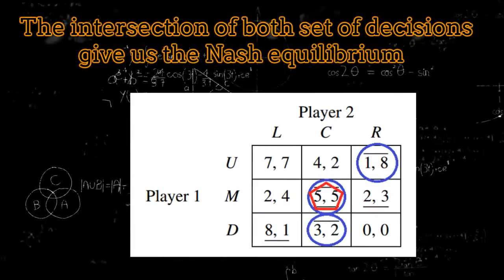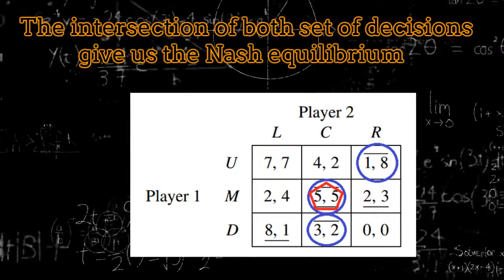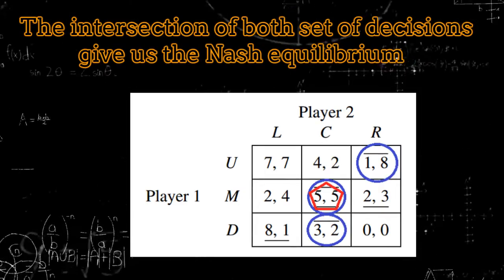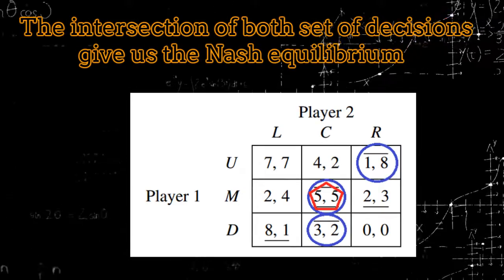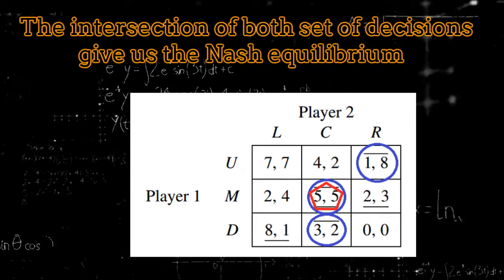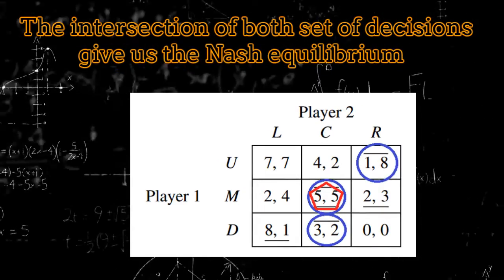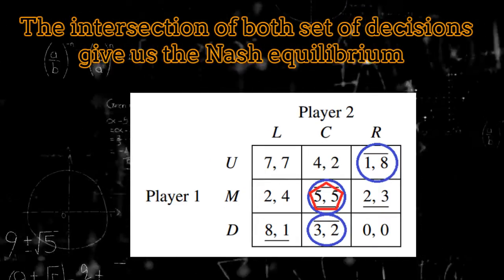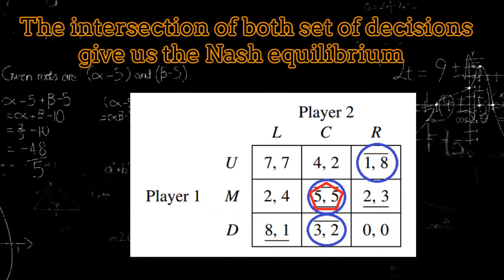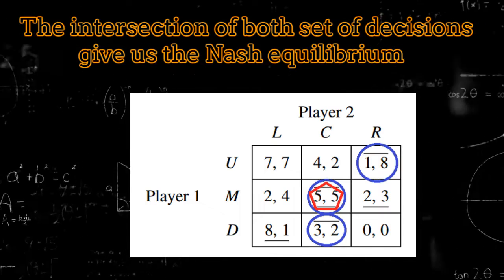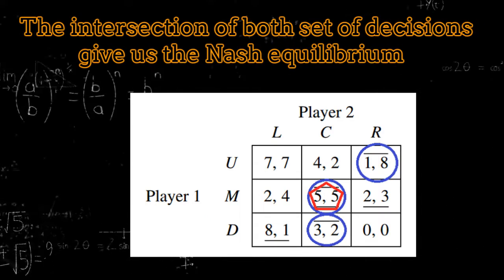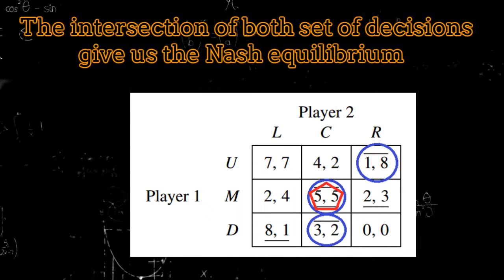Then, finally, the intersection of both sets of decisions mentioned previously corresponds to the Nash Equilibrium. Let's take a look at some examples.